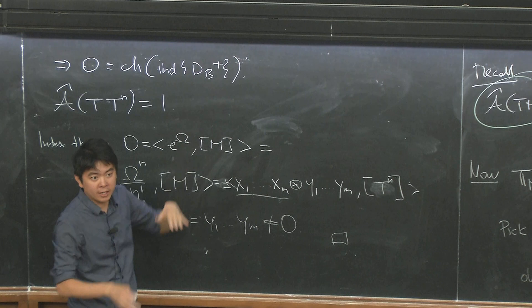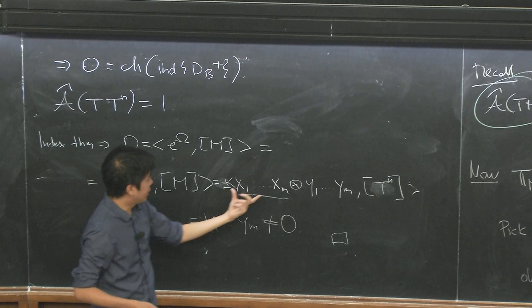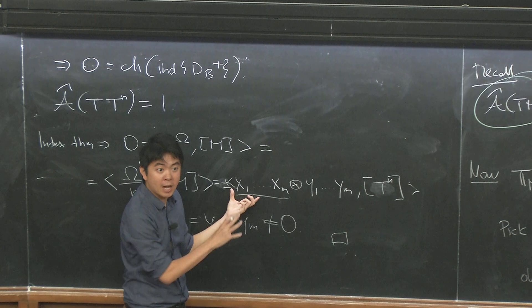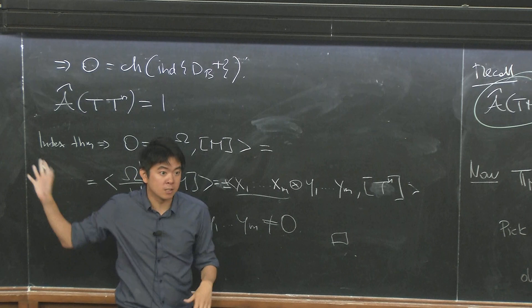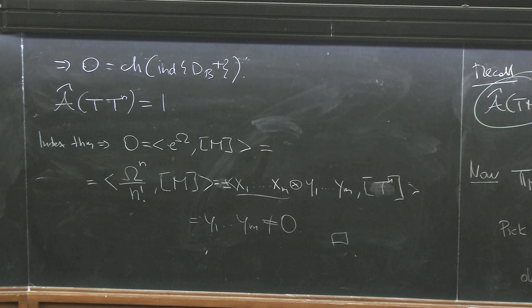This is the simplest case where the Pontryagin classes are trivial and there's a nice product. In general you get terms involving cup products of one-dimensional classes together with Pontryagin classes. If you have some interesting combination of those which is nonzero, that still gives you a conclusion. For instance, if you have P₁ and a couple of one-dimensional classes, this argument might still run. Thank you.